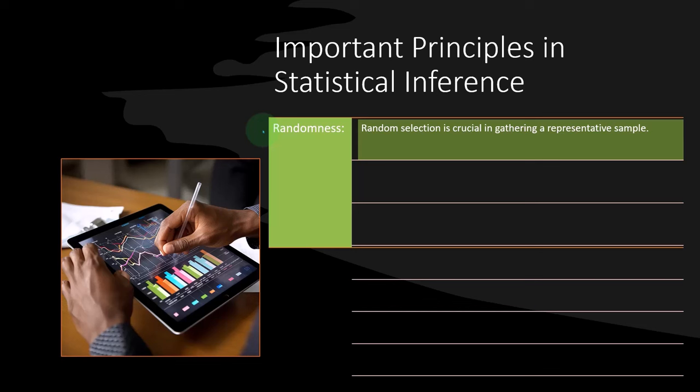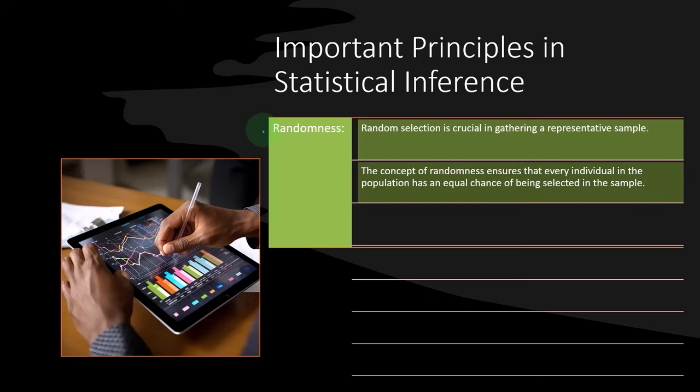And that can be more nuanced. So we'll talk about problems to do that more in the future. But that's the key concept. The concept of randomness ensures that every individual in the population has an equal chance of being selected in the sample.